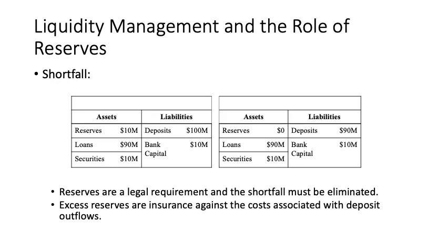To the right hand side, the second bank has deposits of $90 and bank capital of $10, totaling $100, divided between reserves of $10, loans of $80, and securities of $10. If reserves decrease by $10, reserves will become $0, and this represents a very dangerous case for the bank — it has no liquidity.